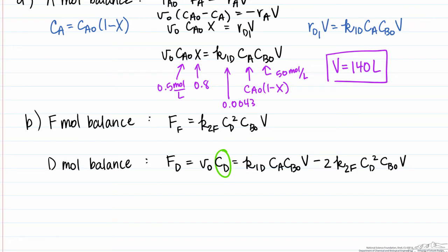We're given the rate constants for both reactions. We know the concentration of A, which is CA0 times (1 minus x), the concentration of the solvent B, and now the volume from Part A. Our only unknown is the concentration of D, and we can solve for it using a solver function. We find that the concentration of D is 0.056 moles per liter.